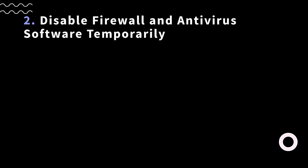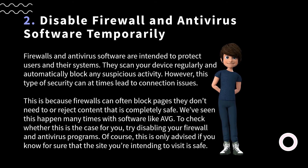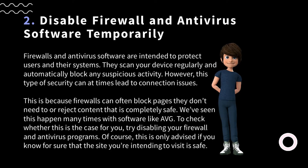The second method: disable firewall and antivirus software temporarily. Firewalls and antivirus software are intended to protect users and their systems — they scan your device regularly and automatically block any suspicious activity. However, this type of security can at times lead to connection issues, because firewalls can often block pages they don't need to or reject content that is completely safe. We've seen this happen many times with software like AVG. Try disabling your firewall and antivirus programs, but only if you know the site you're visiting is safe.